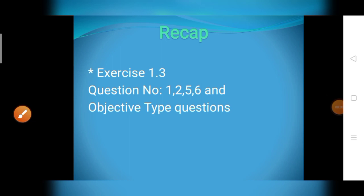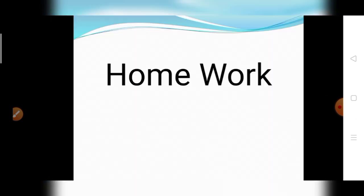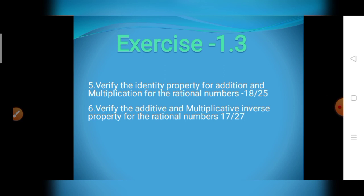Today's recap: Exercise 1.3 questions 1, 2, 5, 6, and objective type questions. Today's homework: Exercise 1.3, fifth question — verify the identity property for addition and multiplication for the rational number minus 18 divided by 25. Sixth question — verify the additive and multiplicative inverse property for the rational number 17 divided by 27. Complete it.